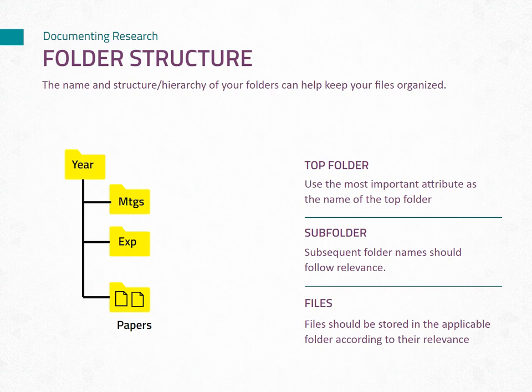The top-level folder serves as the foundation of your folder structure and should be organized by the most relevant attributes of your research. For example, you can use the year as the top-level folder to separate different research periods. You might specify the years explicitly, such as 2019, 2020, and so on, or simply refer to the folders by year one, year two, etc. Like with the file names, keeping the folder names concise and utilizing code or acronyms helps ensure the overall path length remains within the character limit.